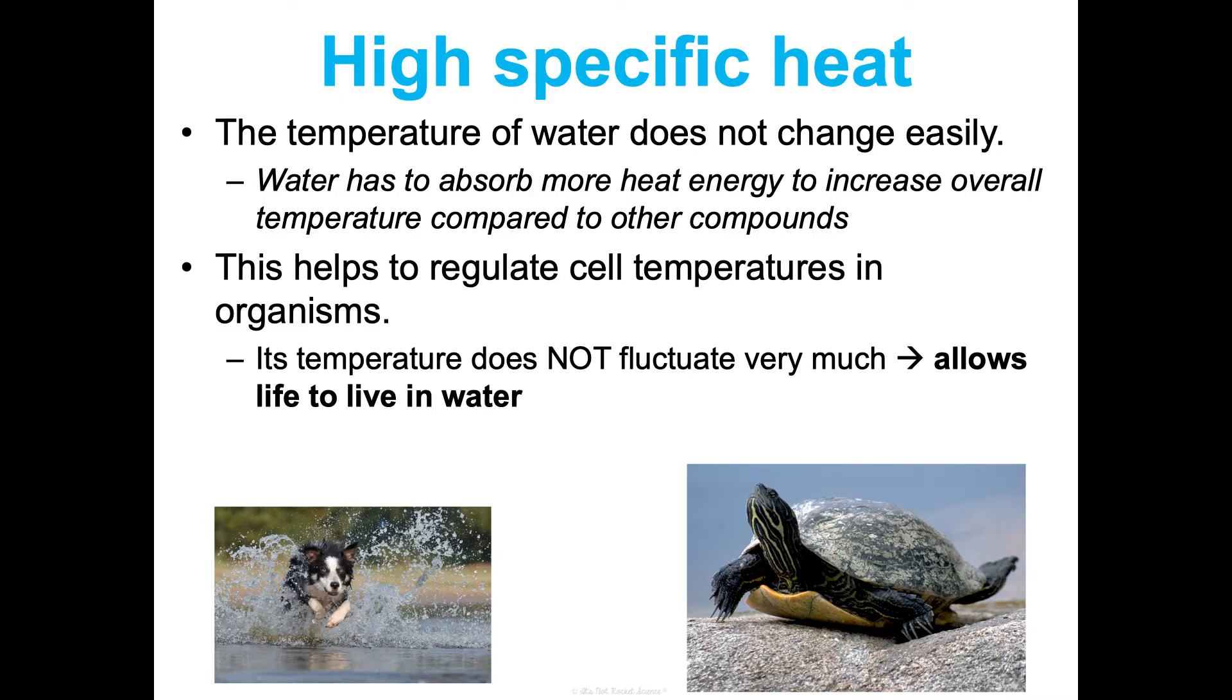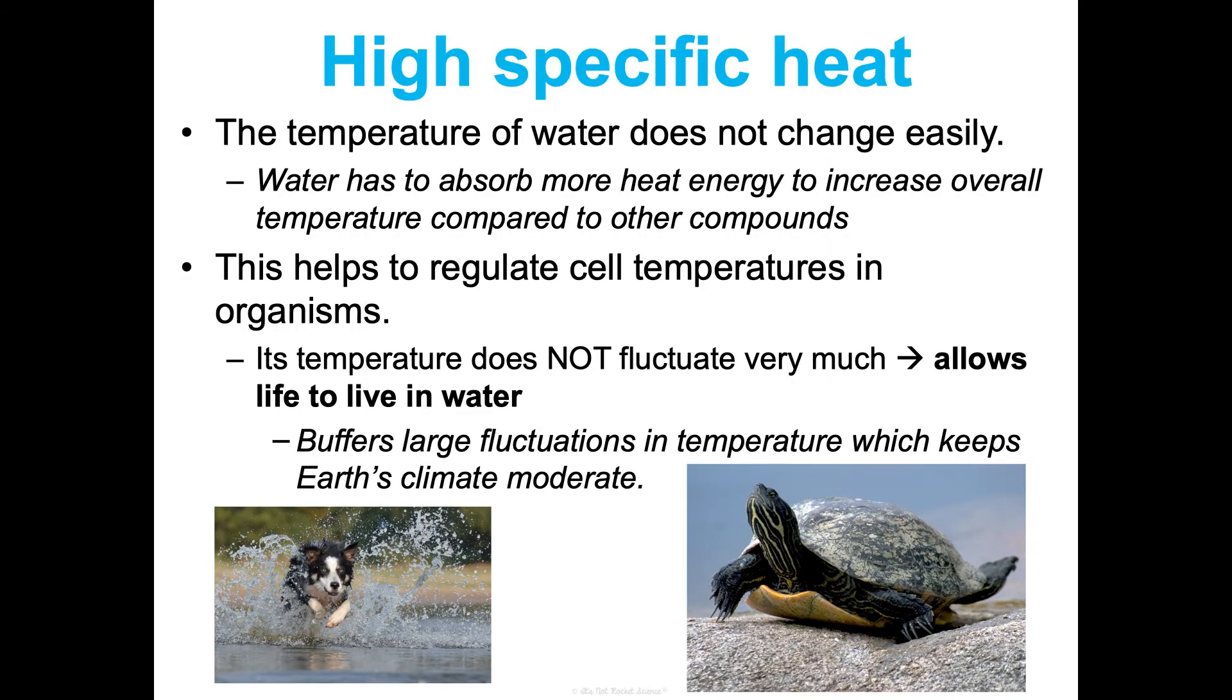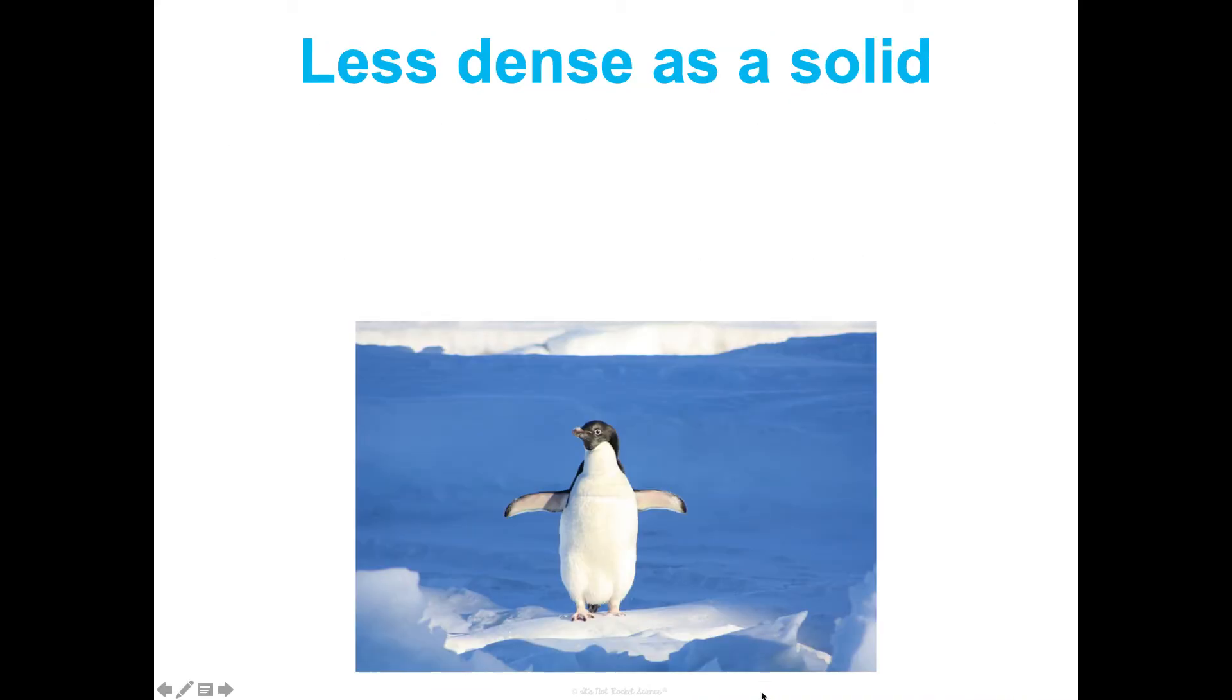This is so important for living things, not just my personal preferences of wanting to go to the beach a lot, because it helps regulate cell temperatures in organisms. Specifically aquatic organisms are able to survive in water because there aren't these drastic shifts in water temperature. They're very slow and very gradual with the seasonal changes. Its temperature does not fluctuate very much, and this makes it possible for things to live in water. It buffers large fluctuations in temperature also with Earth's climate. So much of Earth is water, and because so many of our land masses are surrounded by water, it keeps just Earth in general's climate very moderate because there is so much water. Helps aquatic living things, but also terrestrial living things too.